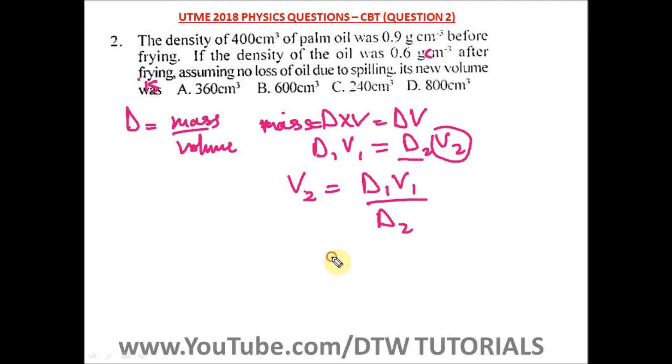Let's put in our values. What is D1? Our first density is 0.9 times what? What is V1? Our first volume, the density of 400 centimeter cube, which is our volume, divided by